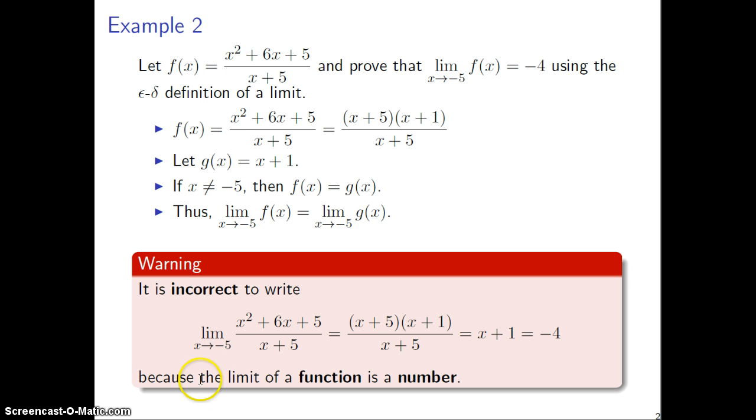So let's talk about that. So the reason writing something like this is incorrect is because the limit of a function is a number, and what you really need when you write an equal sign is that everything on the left and the right side of the equality should be equal things. So here you have the limit of a function is, well, this is not a number, this is a function. So that's why this doesn't work.